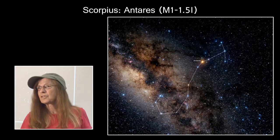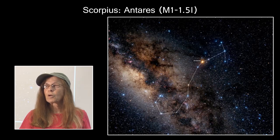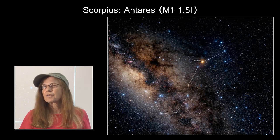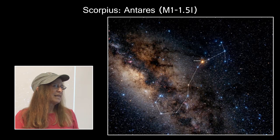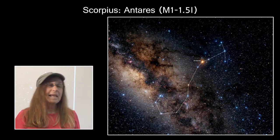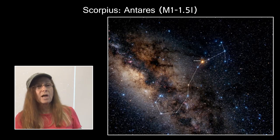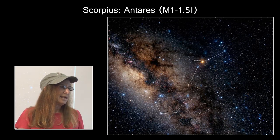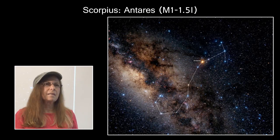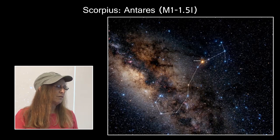Next to Sagittarius, we have Scorpius. We've already mentioned Antares, the heart of the scorpion. Antares is a highly luminous, very cool, luminosity class one, very bright red supergiant — a beautiful constellation in the winter sky that shows up really well.